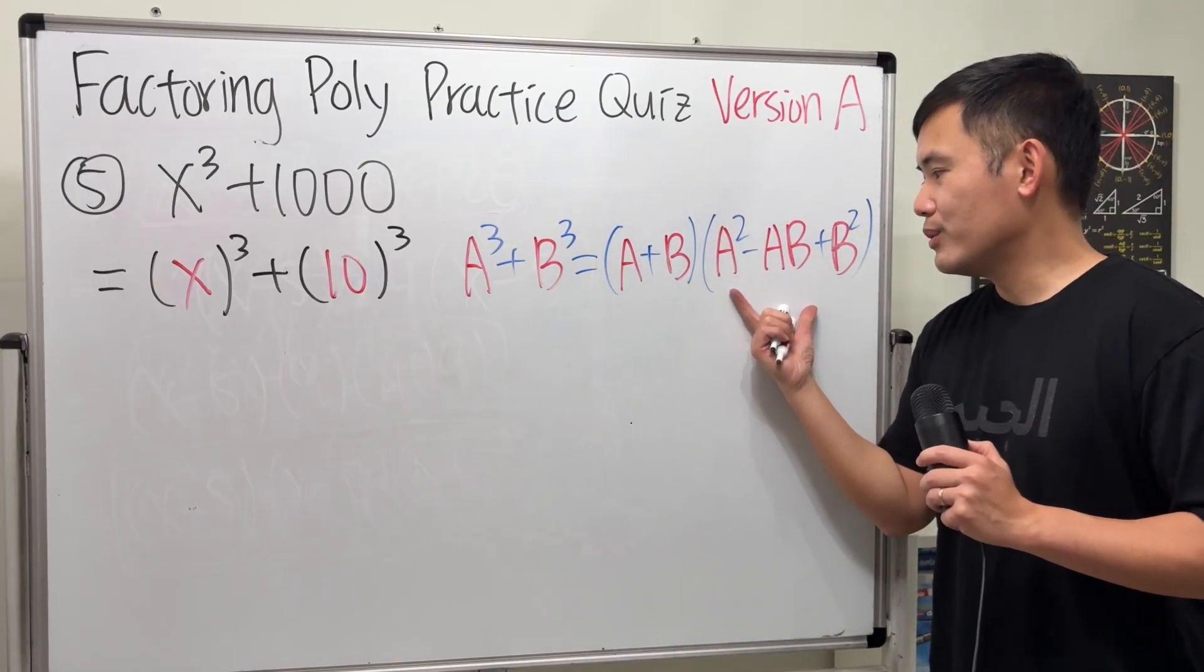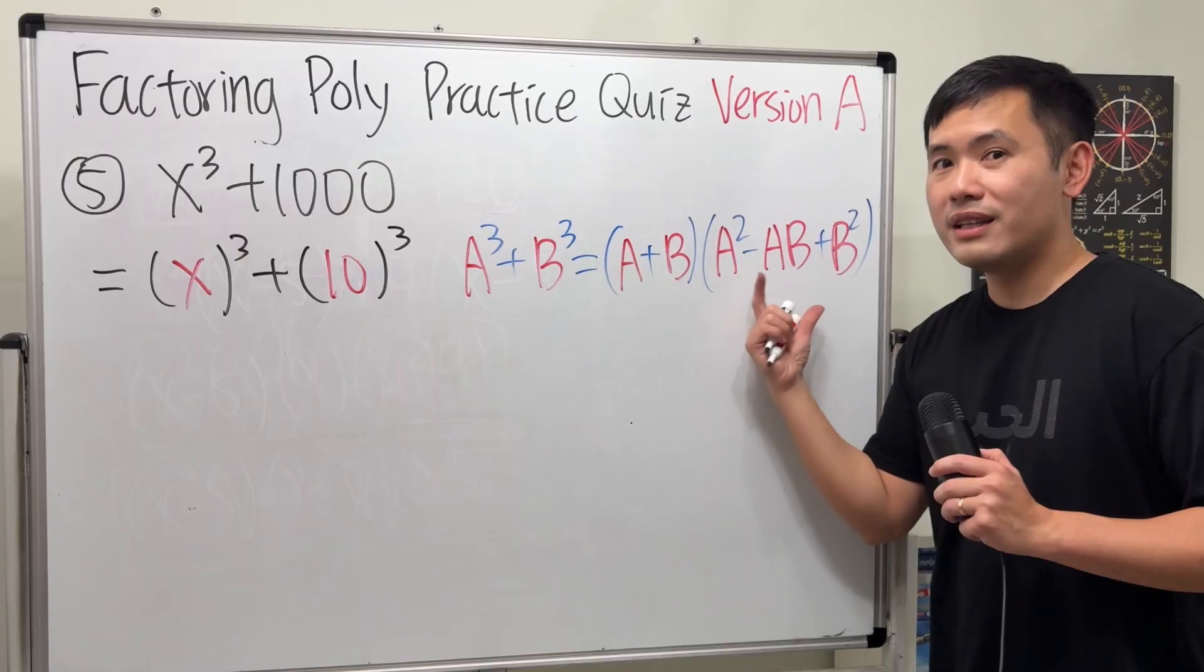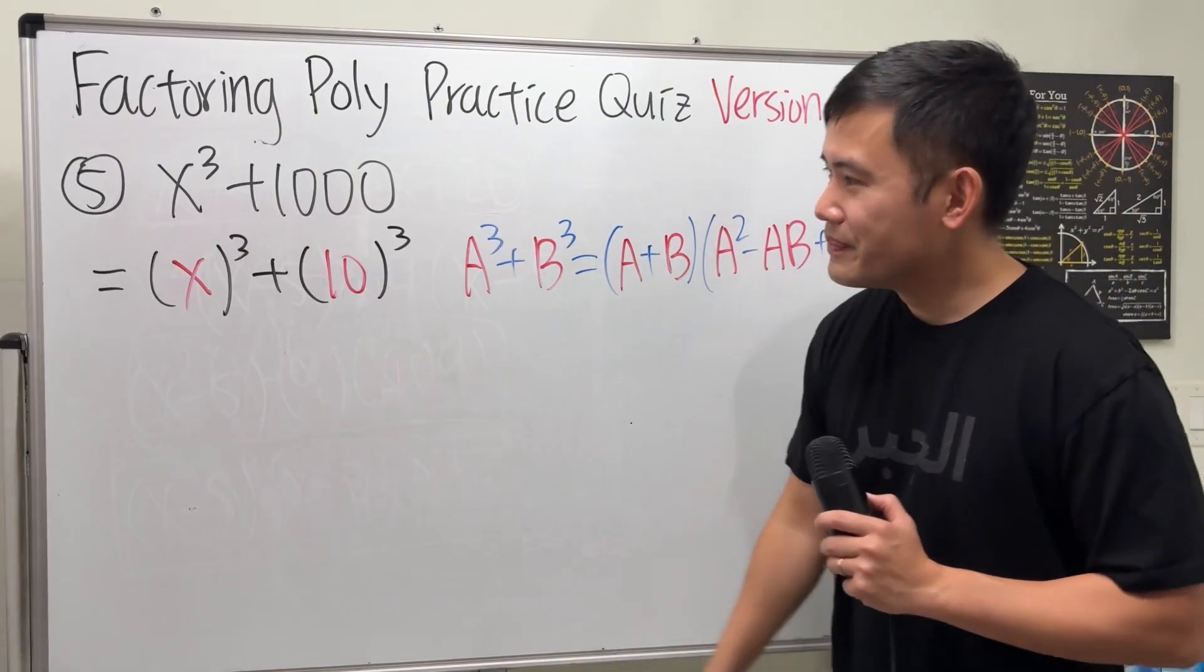a plus b times a squared minus ab and then plus b squared. This right here, do not continue, just keep it like that, and that's why the formula stops right here. This is not factorable.